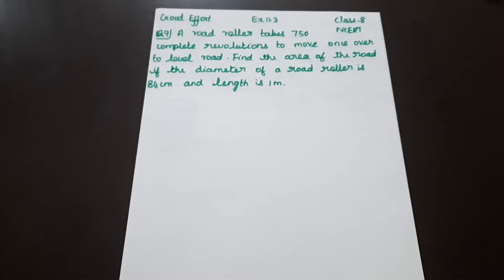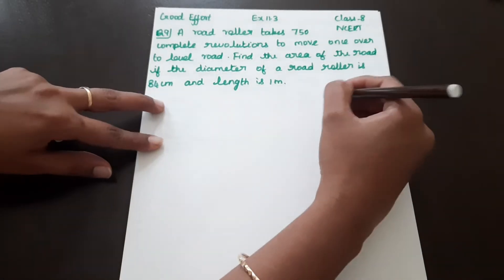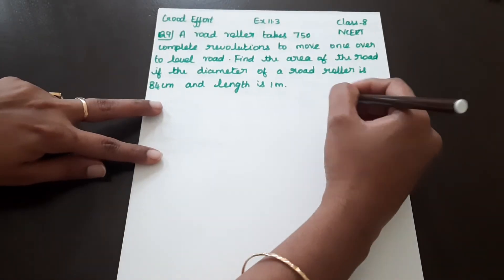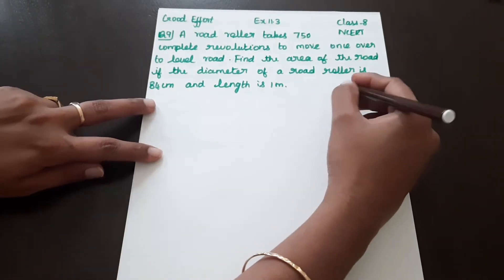Welcome to our channel. Good morning students. In exercise 11.3, question number 9: a road roller takes 750 complete revolutions to move once over to level the road. Find the area of the road if the diameter of the road roller is 84 cm and the length is 1 m. The road roller has a cylindrical shape.